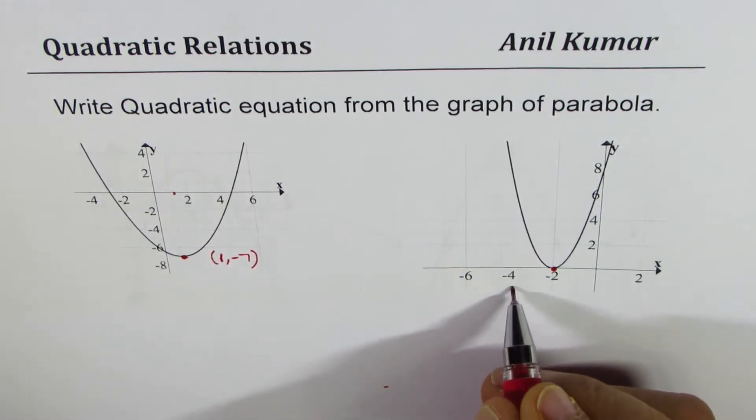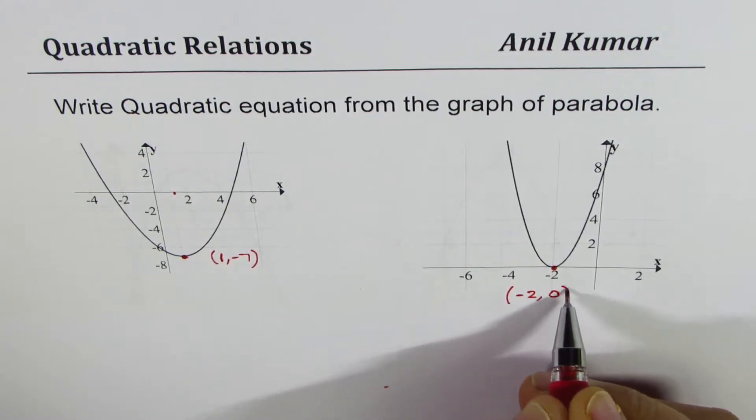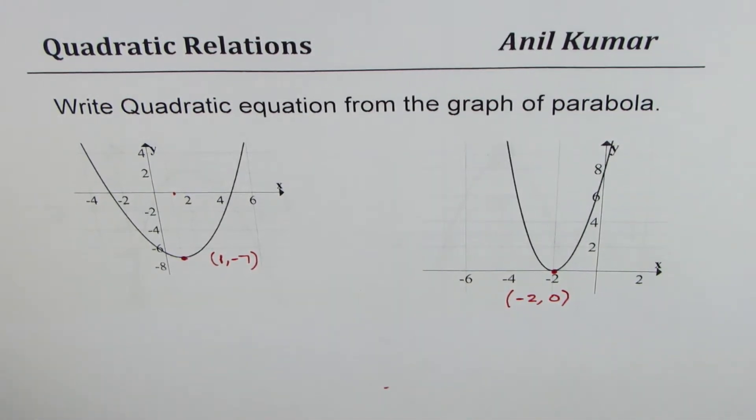In the first case the vertex is at x value of 1 and y value of minus 7. In the second case the vertex is at x value of minus 2, y value of 0. So we know the vertex in both cases and in the next two examples also vertex will be given.